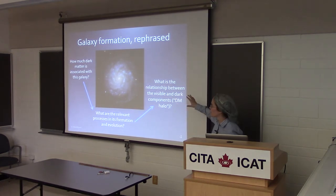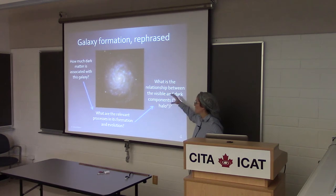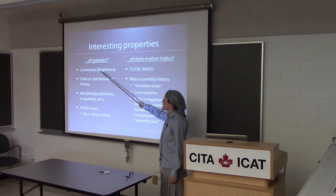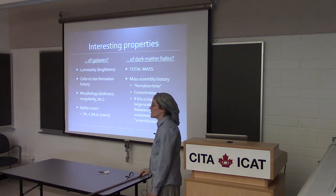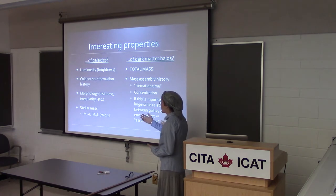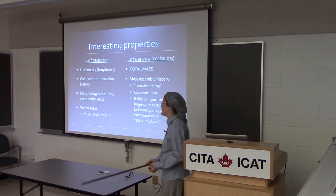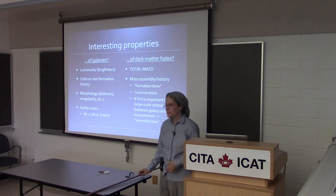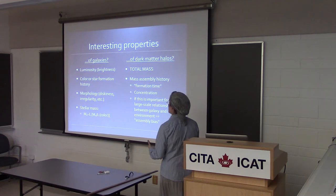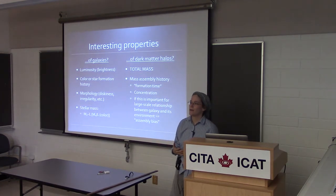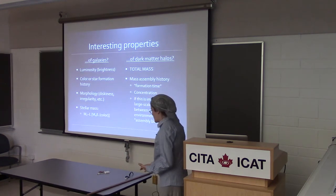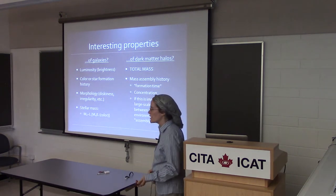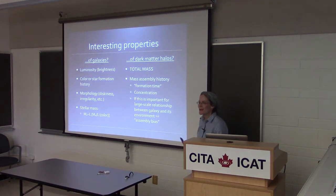We can rephrase the questions about galaxy formation to incorporate dark matter: how much dark matter is associated with this kind of galaxy? What were the relevant processes in its formation and evolution? What's the relationship between visible and dark matter components? To describe galaxy properties, we see the galaxy luminosity, its color or star formation history, its morphology, and its stellar mass, which we typically infer by taking the luminosity and multiplying by a mass-to-light ratio that depends on color. The simplest way to describe a dark matter halo is to say what is its mass.